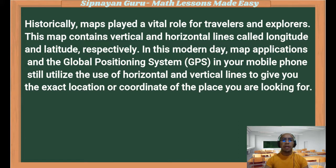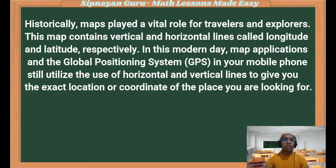The map contains vertical and horizontal lines called longitude and latitude. Historically, maps played a vital role for travelers and explorers. In our mobile phones, we still utilize the use of horizontal and vertical lines to give you the exact location or the coordinate of the place that you are looking for.